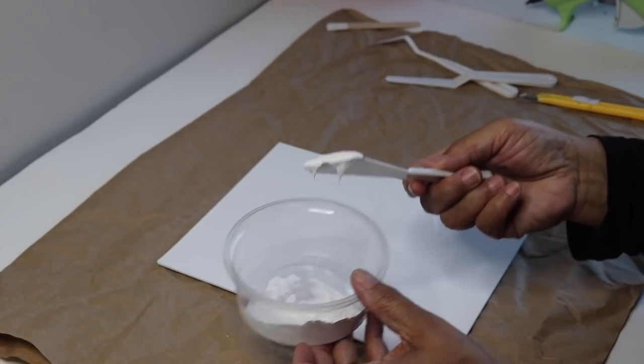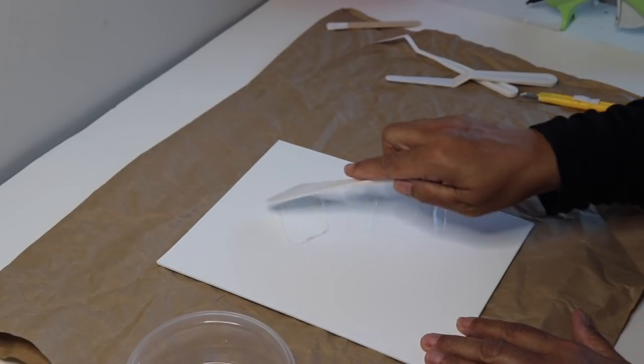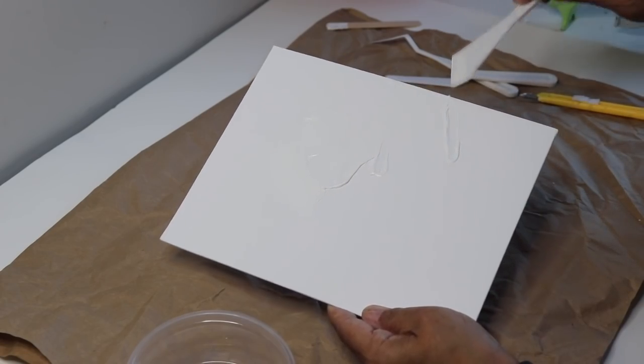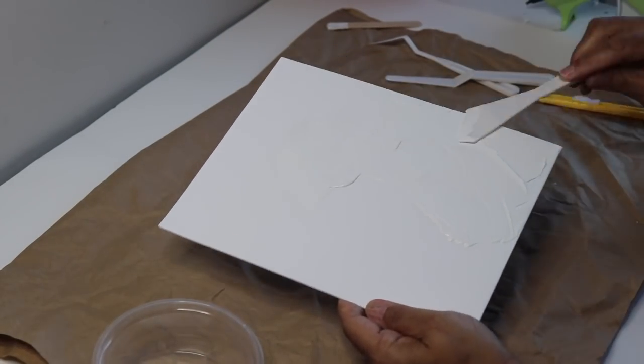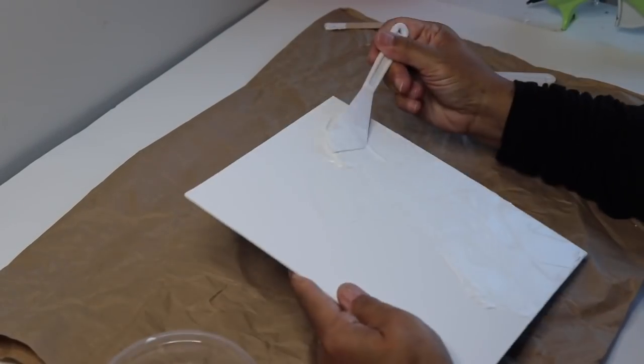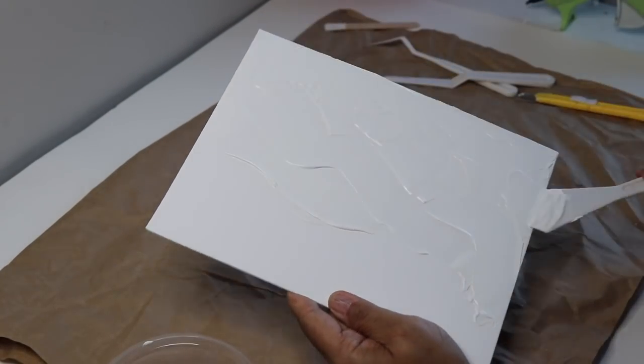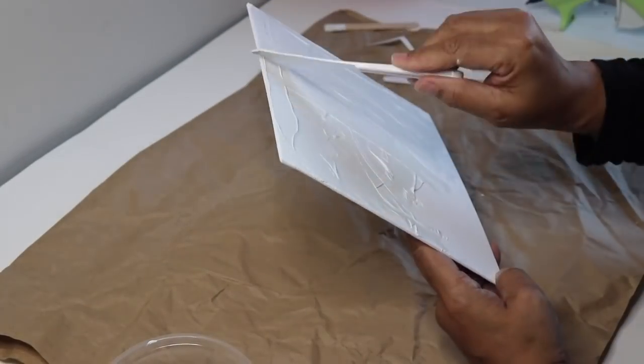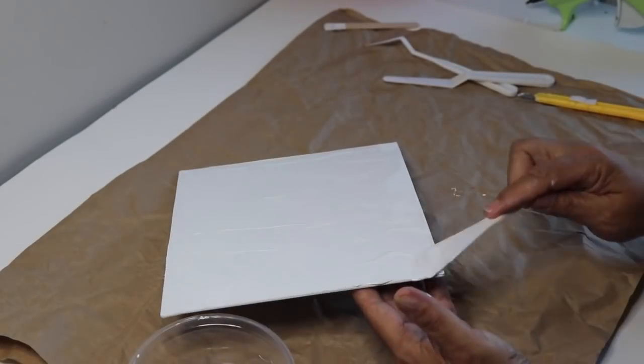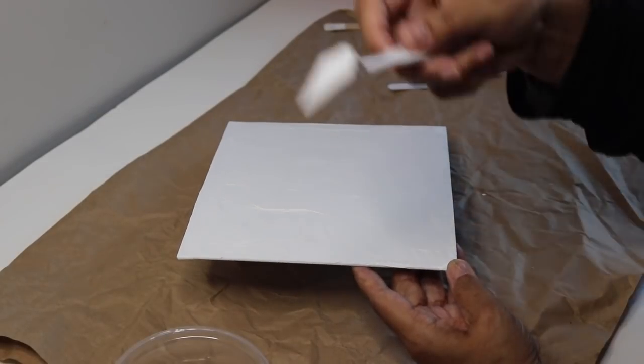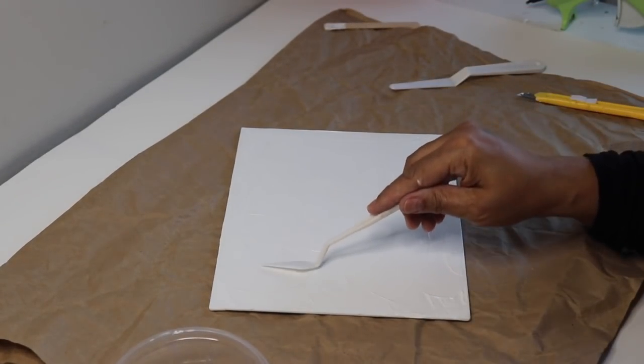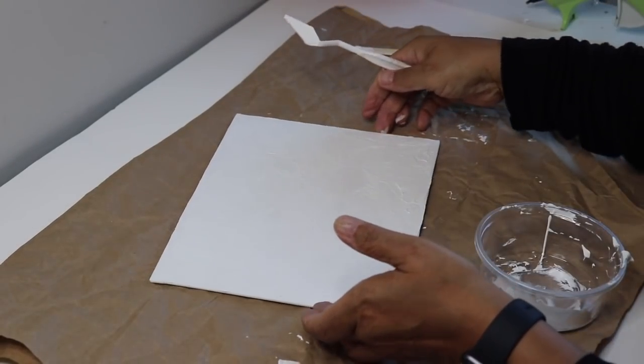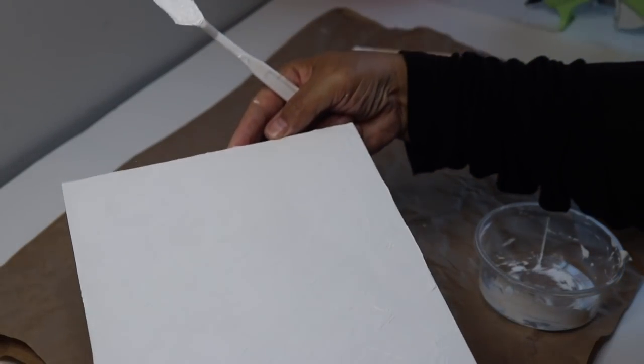Now that my mixture is ready I'm going to spread it out on my panel and I want this to be uneven. I want it to look like one of those really old walls with uneven plaster, that's the look I'm going for. Next I used a smaller spatula to add more detail to the panel. I'm happy with how the panel looks, so I'm going to put this aside to dry.